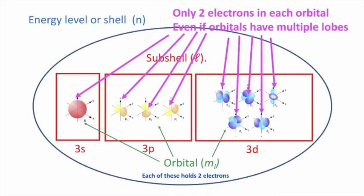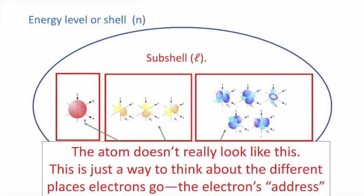Each orbital can have a maximum of two electrons in it, even if the orbitals have multiple lobes. Also, remember that the atom doesn't really look like this. This is just a way we think about the different places that electrons can go.